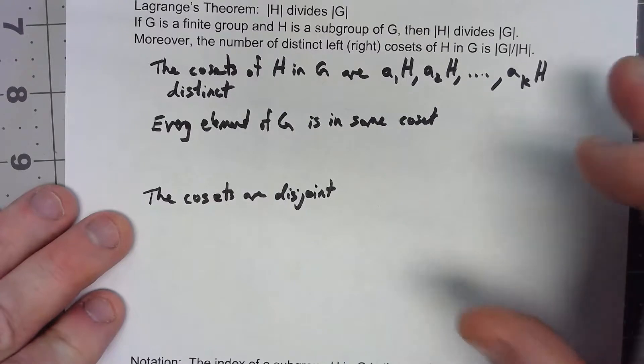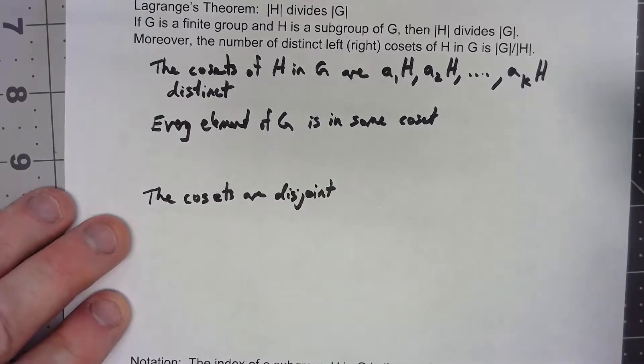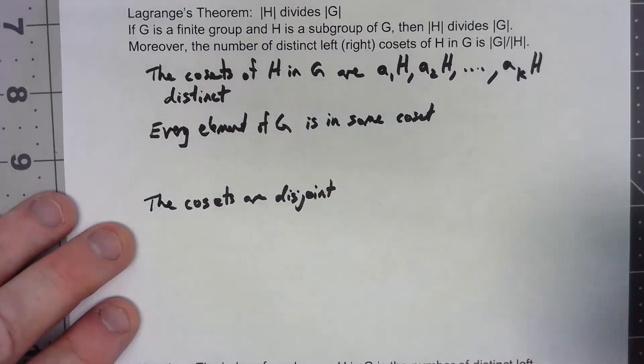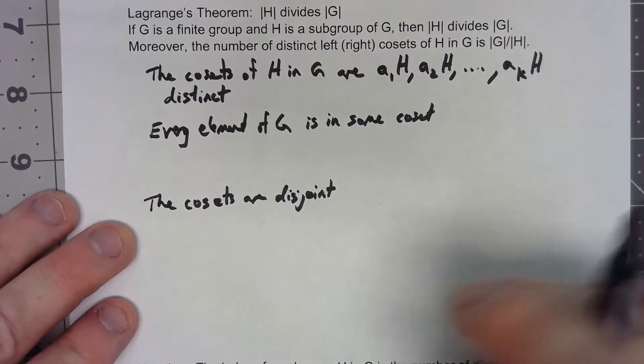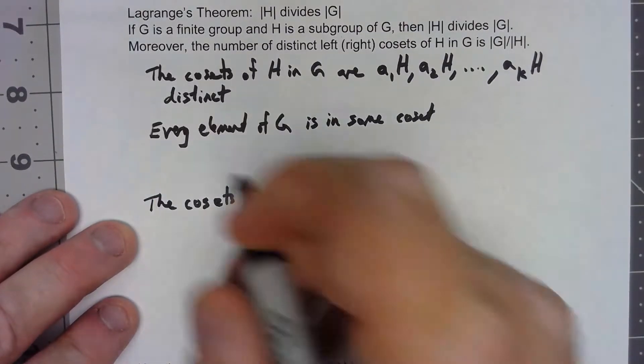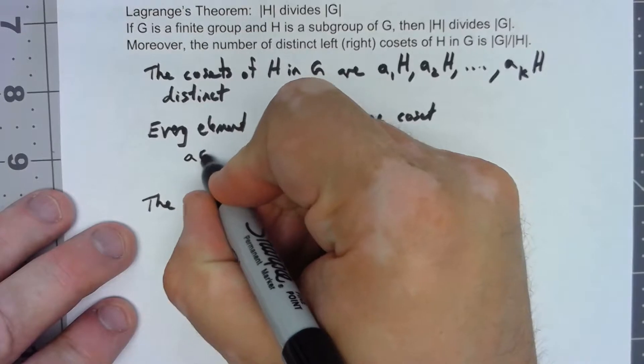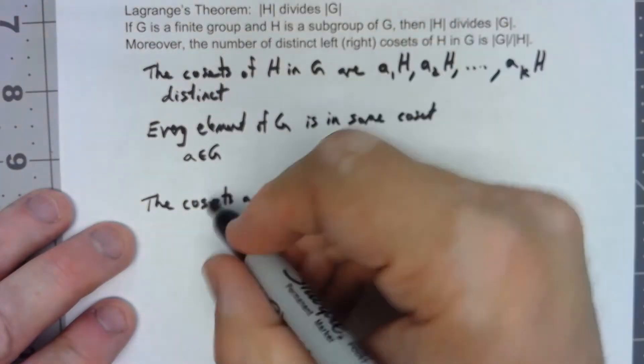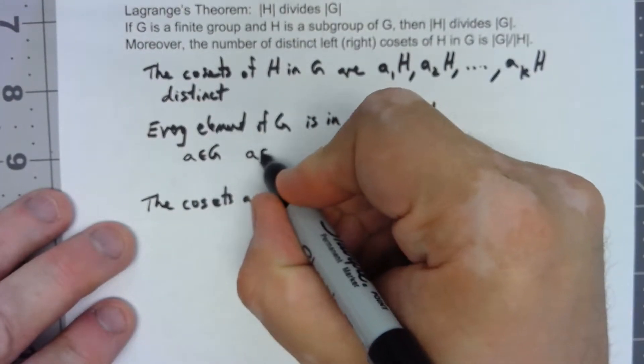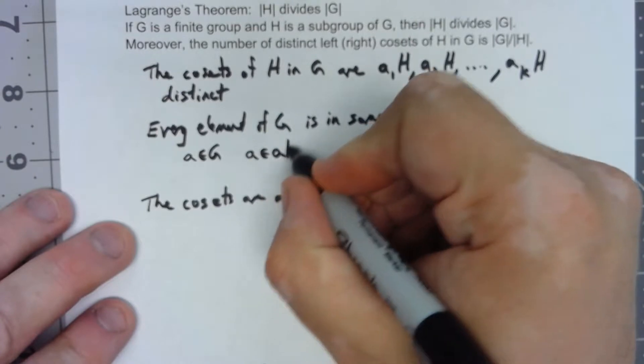But both of these follow pretty much directly from the properties that we had before. So let's say A is an element of G. Then certainly A is in AH.